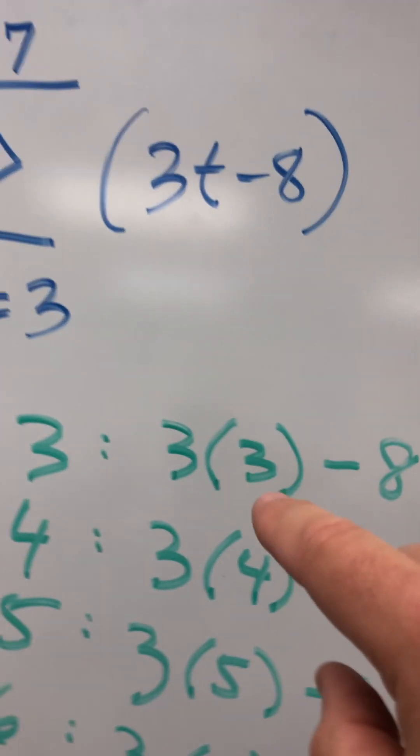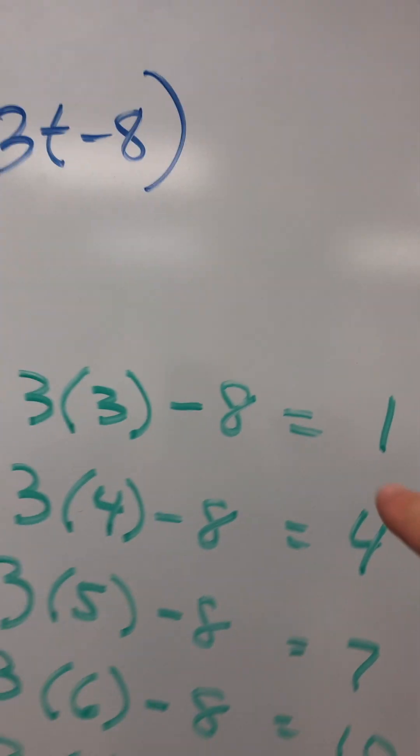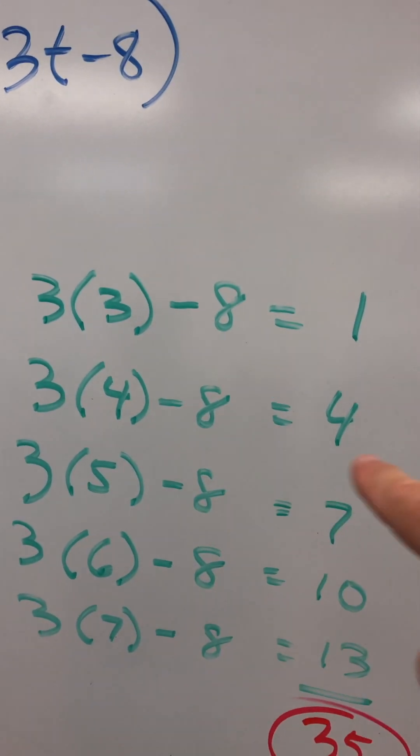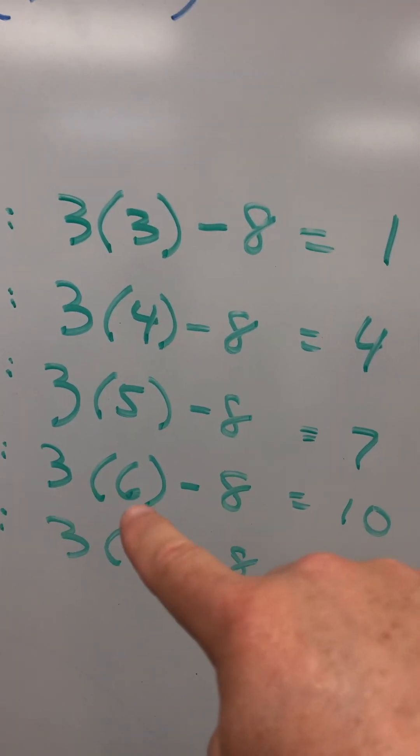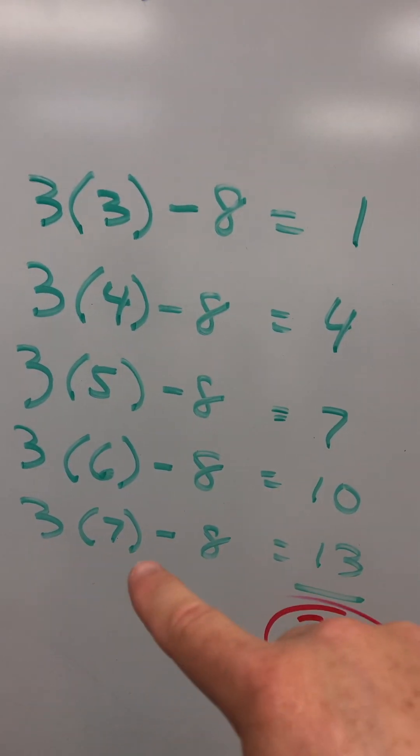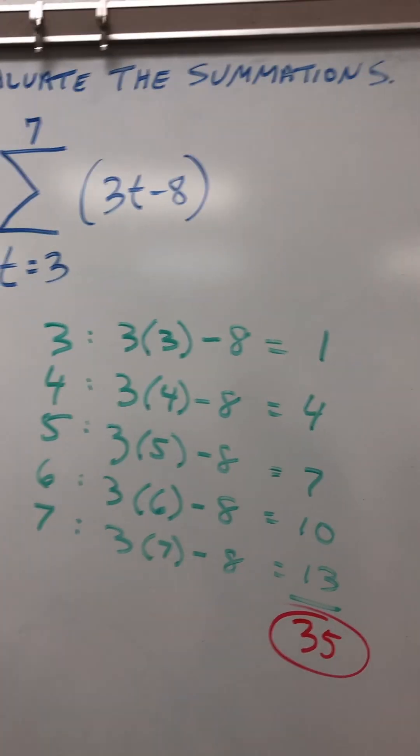So what's three times three minus eight? One. What's three times four minus eight? Four. Three times five minus eight? Seven. Three times six minus eight? Ten. Three times seven minus eight? Thirteen. Add them together. You get thirty-five. Done. That's what you do.